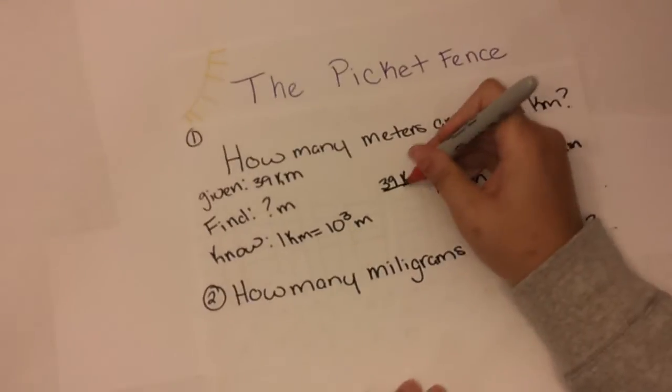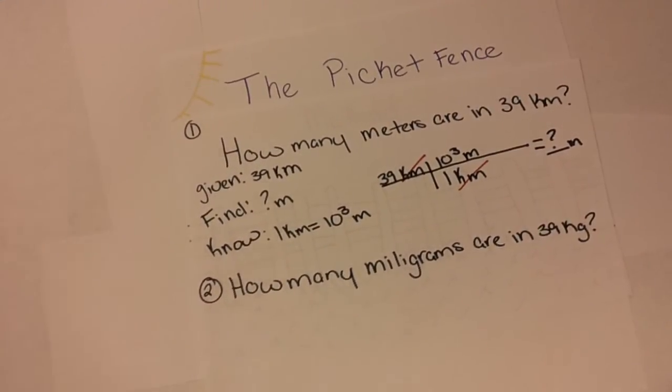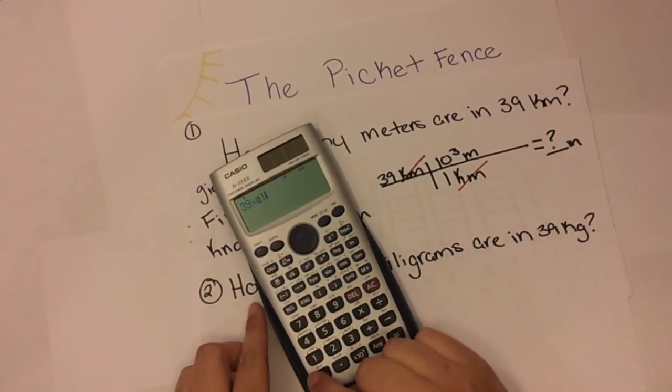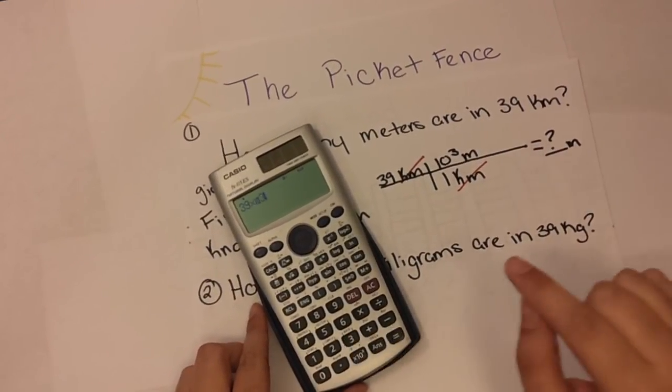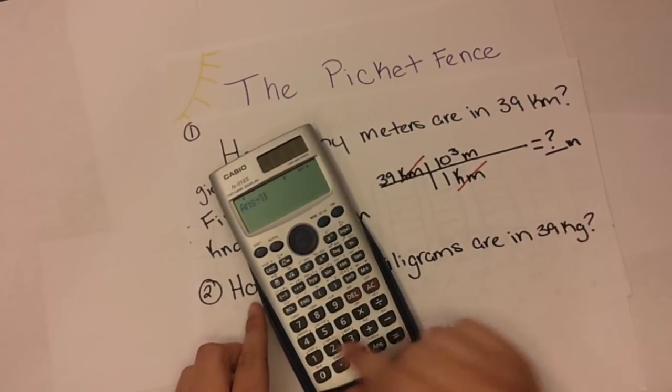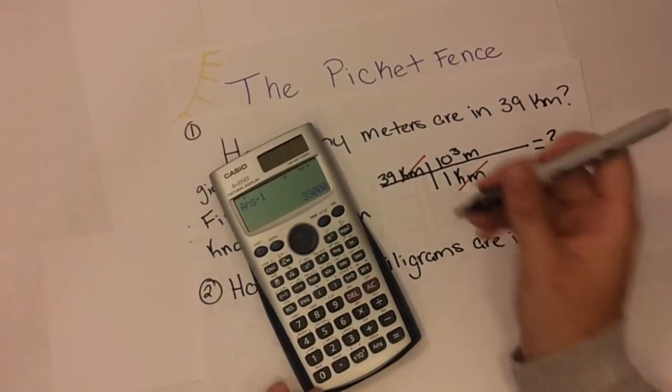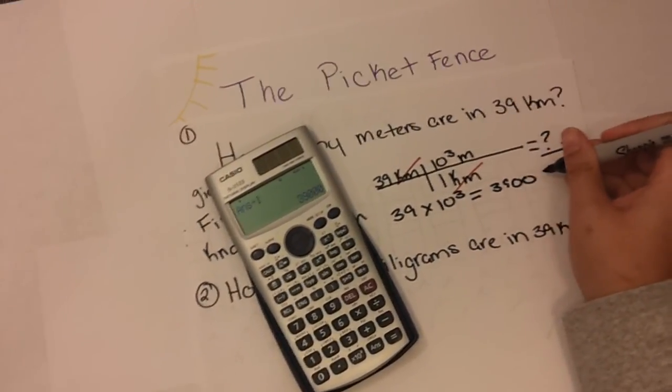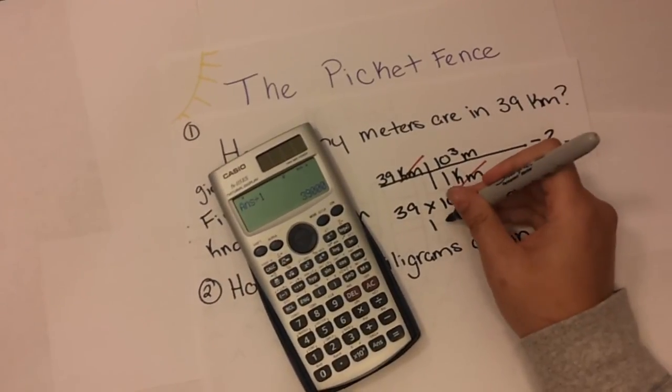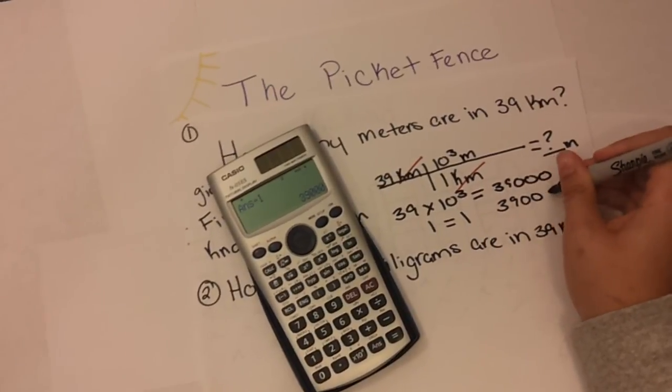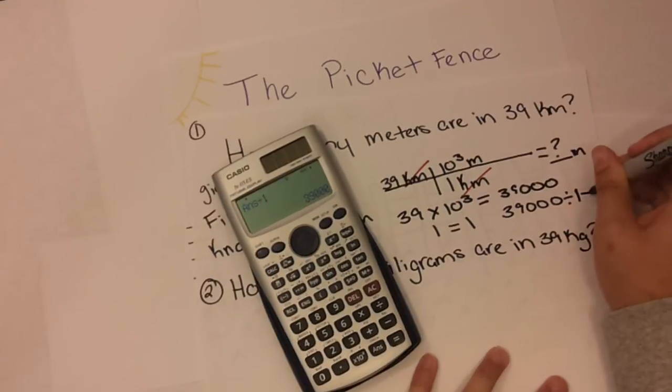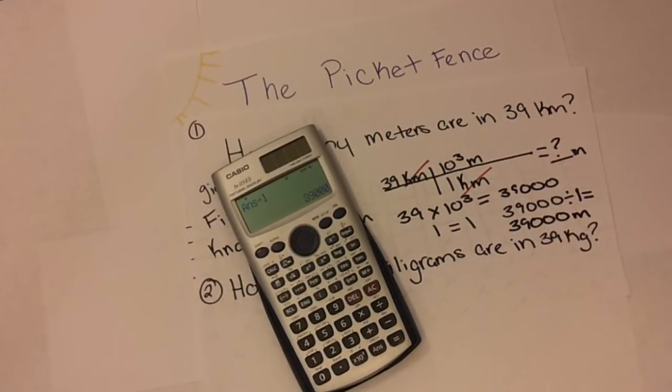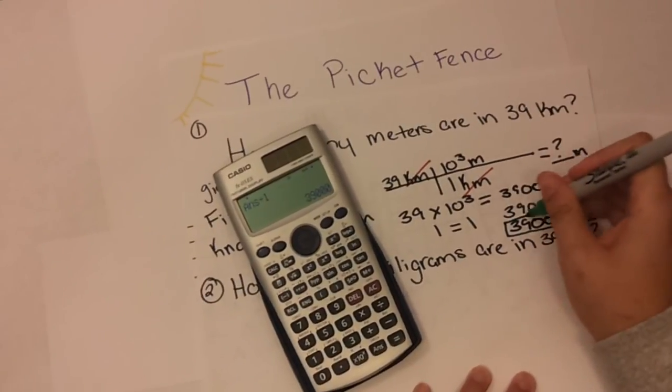We can cancel out kilometers. We can cancel out kilometers, and using our trusty calculator, equals, and then you divide that by one, which this is what I did right here. Then you divide. And 39,000 meters is your answer.